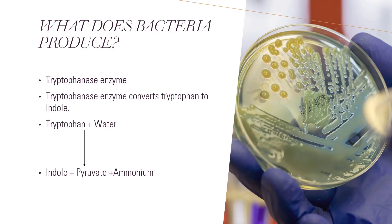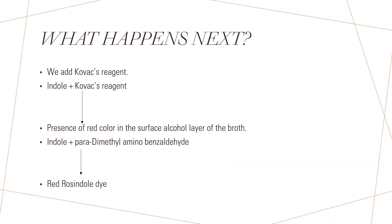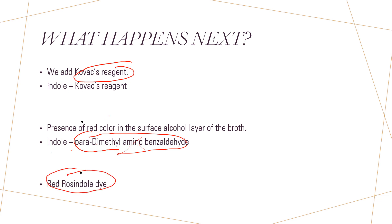To detect whether there is production of indole or not, we use a reagent called Kovac's reagent. Kovac's reagent contains para-dimethylaminobenzaldehyde. When this combines with indole, a red rose indole dye is formed which is red in color. The presence of a red color in the surface alcohol layer of the growth indicates indole positive.